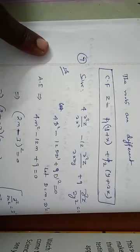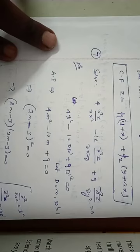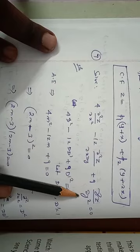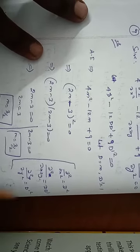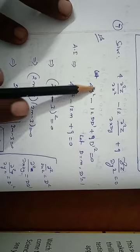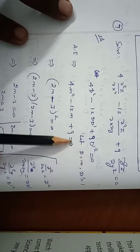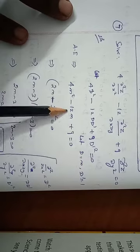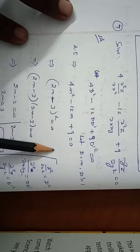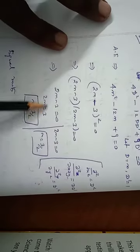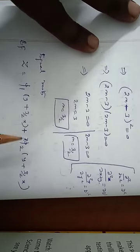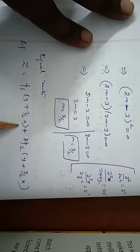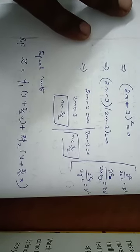Problem 7: Solve 4·∂²z/∂x² - 12·∂²z/∂x∂y + 9·∂²z/∂y² = 0. Converting using D² = ∂²/∂x², DD' = ∂²/∂x∂y, D'² = ∂²/∂y², this becomes 4D² - 12DD' + 9D'² = 0. Let D = m, D' = 1: 4m² - 12m + 9 = 0, which factors as (2m - 3)² = 0. So m = 3/2, 3/2 — repeated roots. The complementary function is z = φ₁(y + 3x/2) + x·φ₂(y + 3x/2).